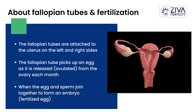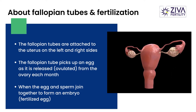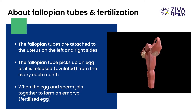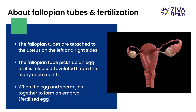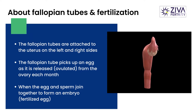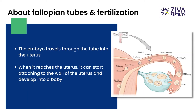Before understanding a hydrosalpinx, we need to understand that there are two tubes attached to a uterus on either side, and these tubes open on to ovaries. When the ovaries release an egg, it is caught by the end of the tube and the egg can then wait in the tube for sperm for fertilization to happen there.